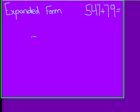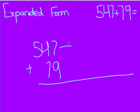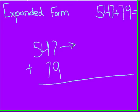First you write 547 plus 79. Then you put an arrow next to 547, and then you put an arrow next to 79.